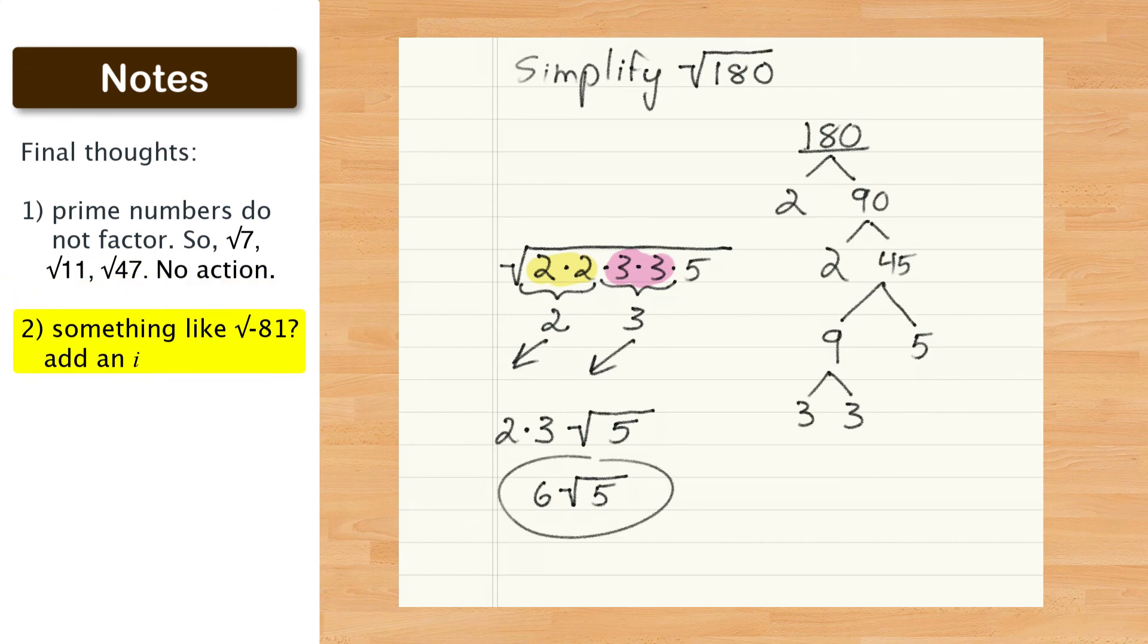Also, if your number is negative, then all you need to do is add a cute little i on the outside of your radical symbol, out in front so it gets noticed. Practice writing it with a little flare. It's a nice touch.